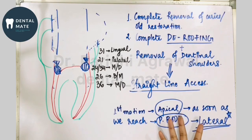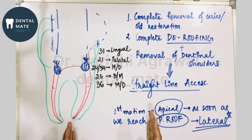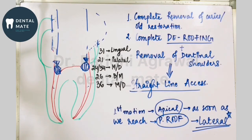These are the objectives of access cavity preparation - six points to remember - which could be asked as a short answer question: what are the objectives and why is access cavity preparation done? In the next video we will be talking about the significance of straight-line access and the laws of access opening. Stay tuned, keep visiting, thank you.